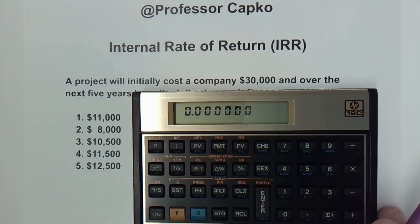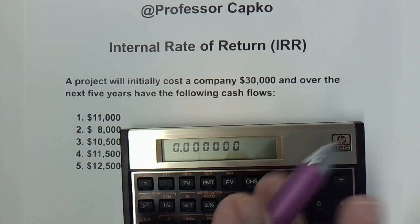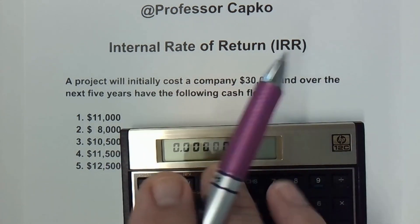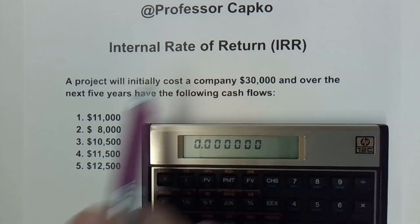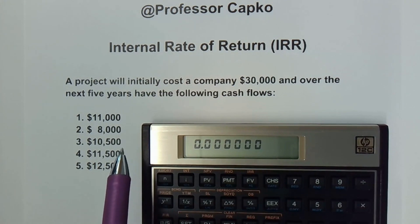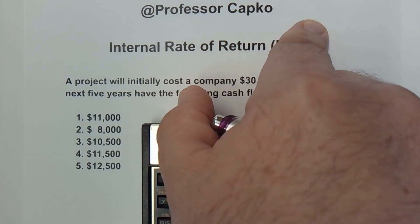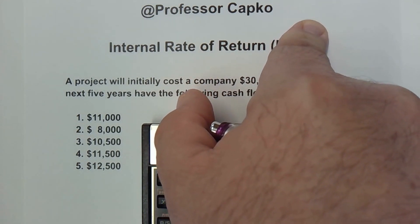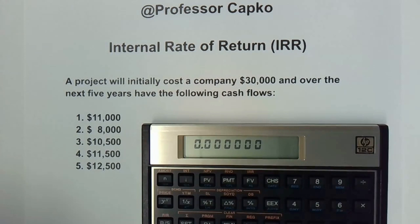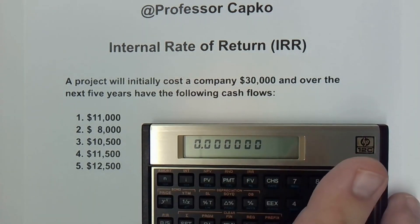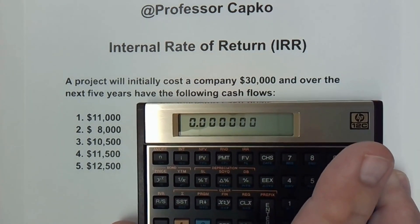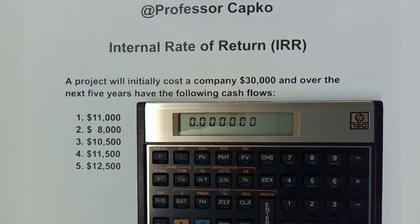In a prior video, I showed how to calculate the internal rate of return — the IRR — for this project using a Texas Instruments BA2 Plus calculator. If you missed that video, I've got it linked up here. So if you have that calculator, you can see how to do it there. If you don't have a financial calculator, I've got a link in the description with some very good financial calculators if you want to get one.